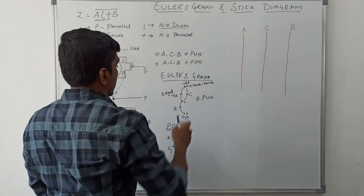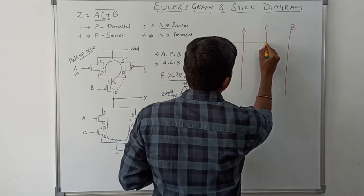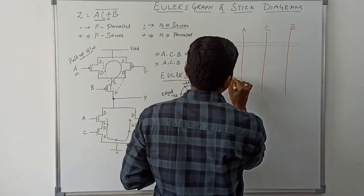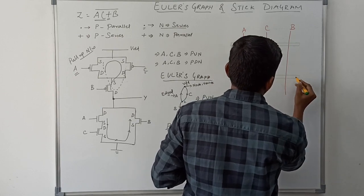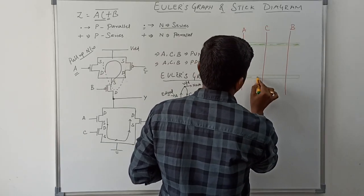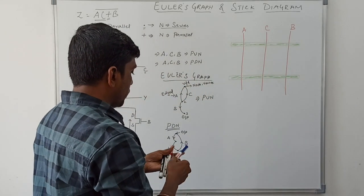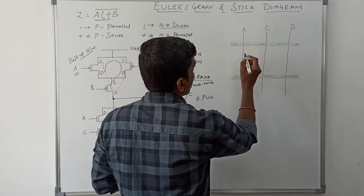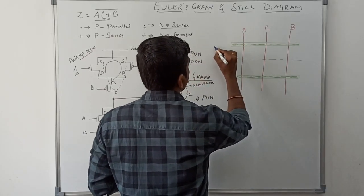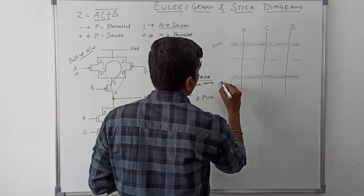Then I place the diffusion — green color represents diffusion, both P diffusion and N diffusion. I mark the shared portions for reference. Whenever the diffusion is crossed by the polysilicon, it makes a transistor. The top portion is called the pull-up network, meaning PMOS transistors.